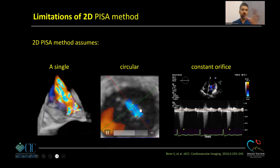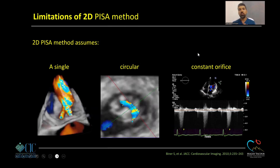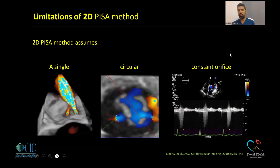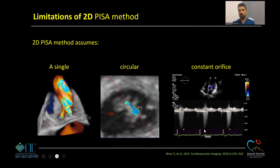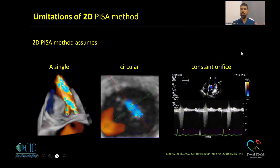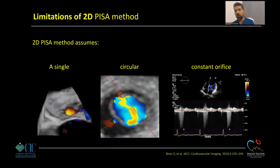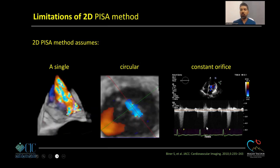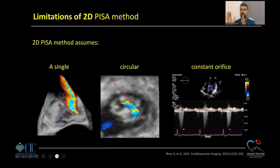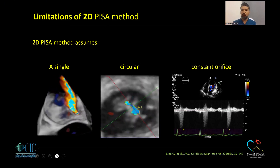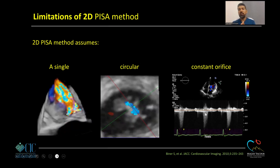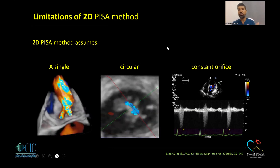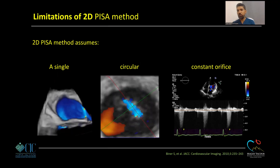In cases where the regurgitation orifice is a bizarre or oval shape, and PISA assumes a constant orifice throughout systole — unless you trace the VTI of the MR jet to account for duration. If you only use peak velocity multiplied by the radius and aliasing velocity, you get only the ERO. ERO alone does not account for the duration of mitral regurgitation. You must trace the VTI to get the volume. So PISA has many pitfalls: it assumes a single orifice, a circular orifice, and constant flow throughout systole.